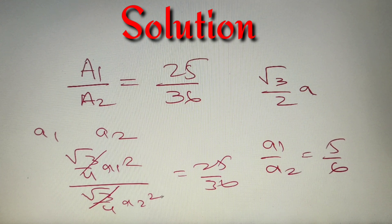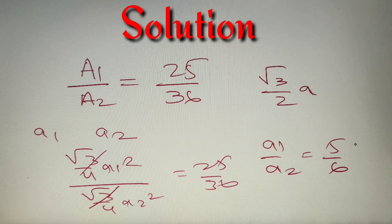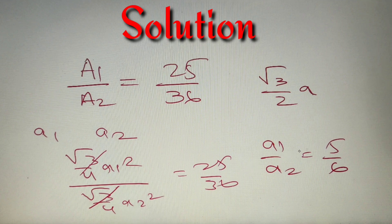So we have got that a1 square by a2 square is equal to 25 by 36, and when we take square root on both sides we'll get that a1 by a2 is equal to 5 by 6. Now let's find the ratio of their altitudes.